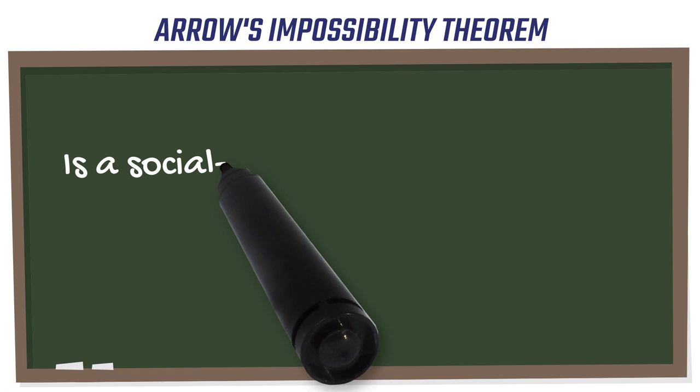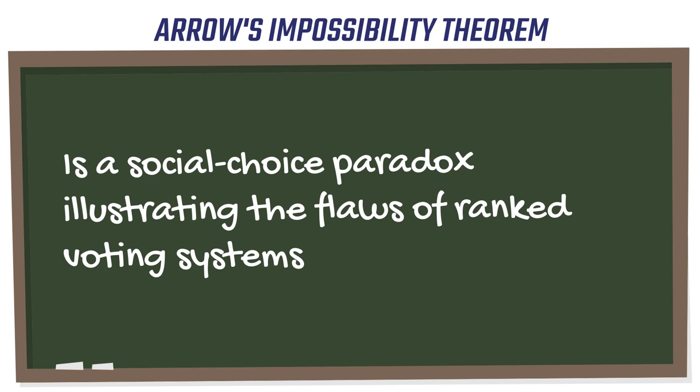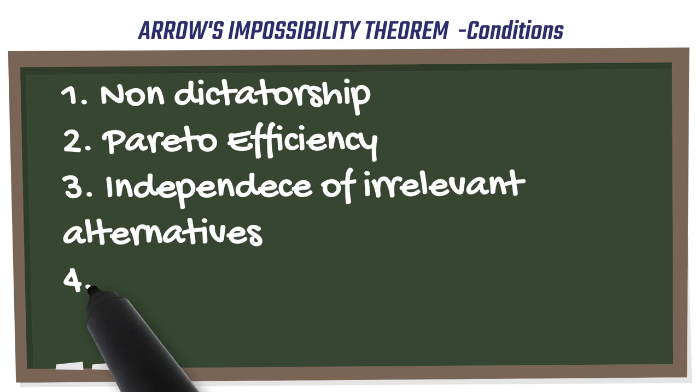Understanding Arrow's impossibility theorem. Democracy depends on people's voices being heard. For example, when it is time for a new government to be formed, an election is called, and people head to the polls to vote. Millions of voting slips are then counted to determine who is the most popular candidate and the next elected official.